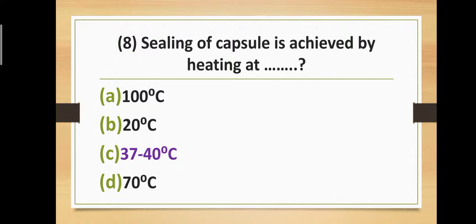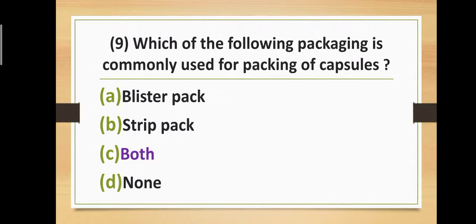Question number eight: Sealing of a capsule is achieved by heating at what temperature? Option A: 100°C. Option B: 20°C. Option C: 37 to 40°C. Option D: 70°C. The correct answer is option C — 37 to 40°C. Sealing of a capsule is achieved by heating at 37 to 40 degrees Celsius.